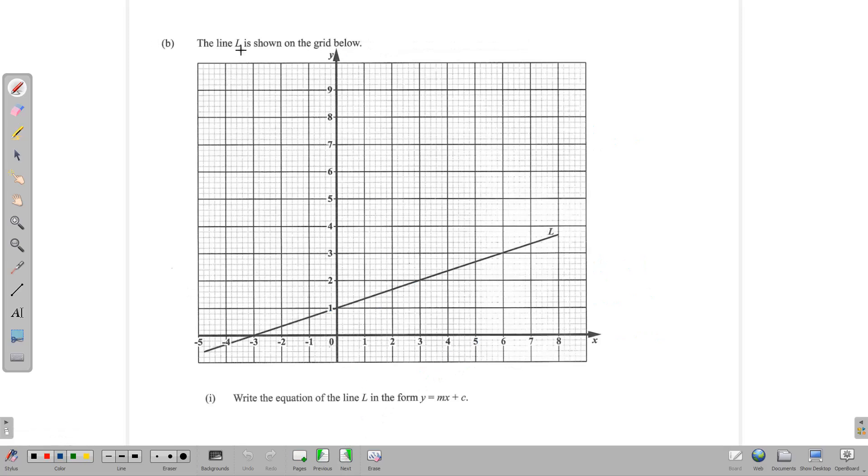Moving on. Here we have a line L that is drawn on the grid below, and we want to write the equation of line L in the form y equal mx plus c. We call this the slope-intercept form, y equal mx plus c. This is the slope, the gradient, and this is the c, which is the y-intercept.